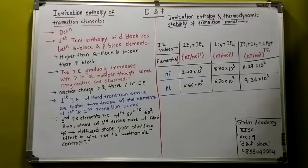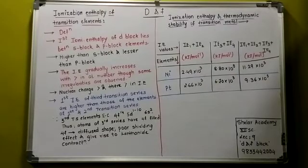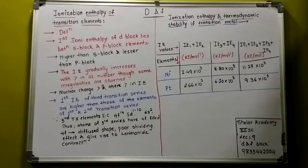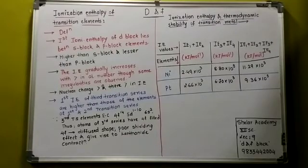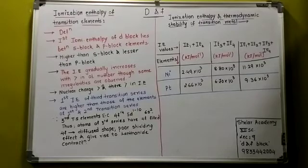The first ionization enthalpy of the elements of the third transition series is higher than those of the elements of the first and second transition series. The reason is that the third transition series elements have filled 4f orbitals. The 4f orbital has a poor shielding effect because it has a diffuse structure. As a result, the valence electrons experience a greater nuclear attraction. Consequently, it requires a large amount of energy to ionize the elements of the third transition series, and hence their ionization enthalpy is higher than that of the first and second series.